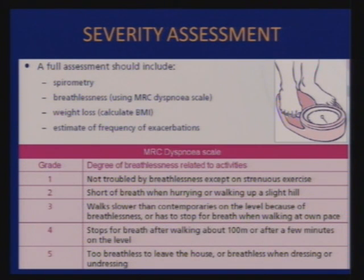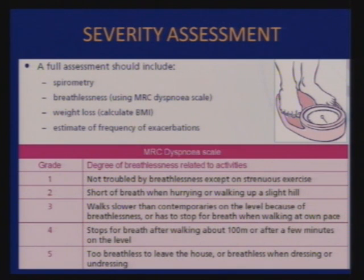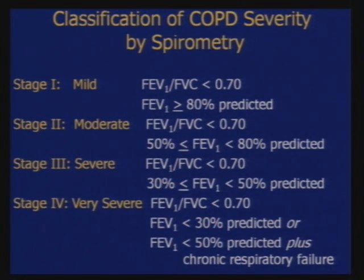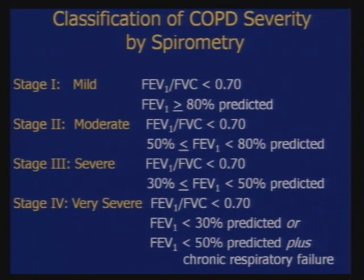The MRC dyspnea scale: Grade 1 — not troubled by breathlessness except on strenuous exercise; Grade 2 — short of breath when hurrying or walking up a slight hill; Grade 3 — walks slower than contemporaries on the level or has to stop for breath walking at own pace; Grade 4 — stops for breath after walking about 100 meters or after a few minutes on the level; Grade 5 — too breathless to leave the house or breathless when dressing or undressing. The GOLD spirometry classification: Stage 1 mild — FEV1 more than 80 percent; Stage 2 moderate — FEV1 50 to 80 percent; Stage 3 severe — FEV1 30 to 50 percent; Stage 4 very severe — FEV1 less than 30 percent or 30 to 50 percent with chronic respiratory failure.